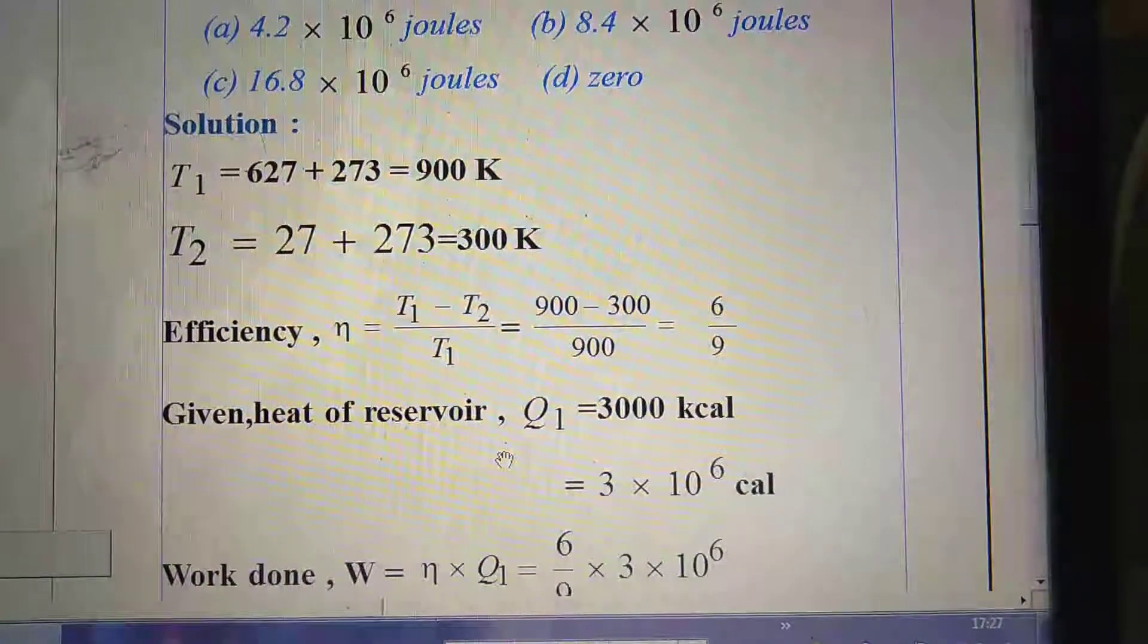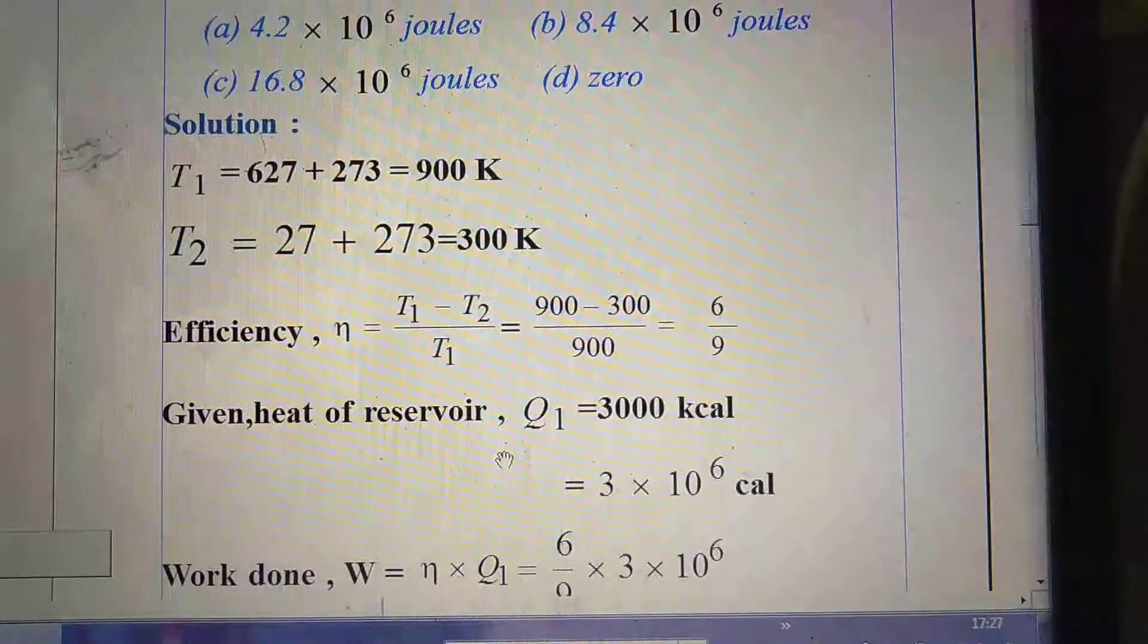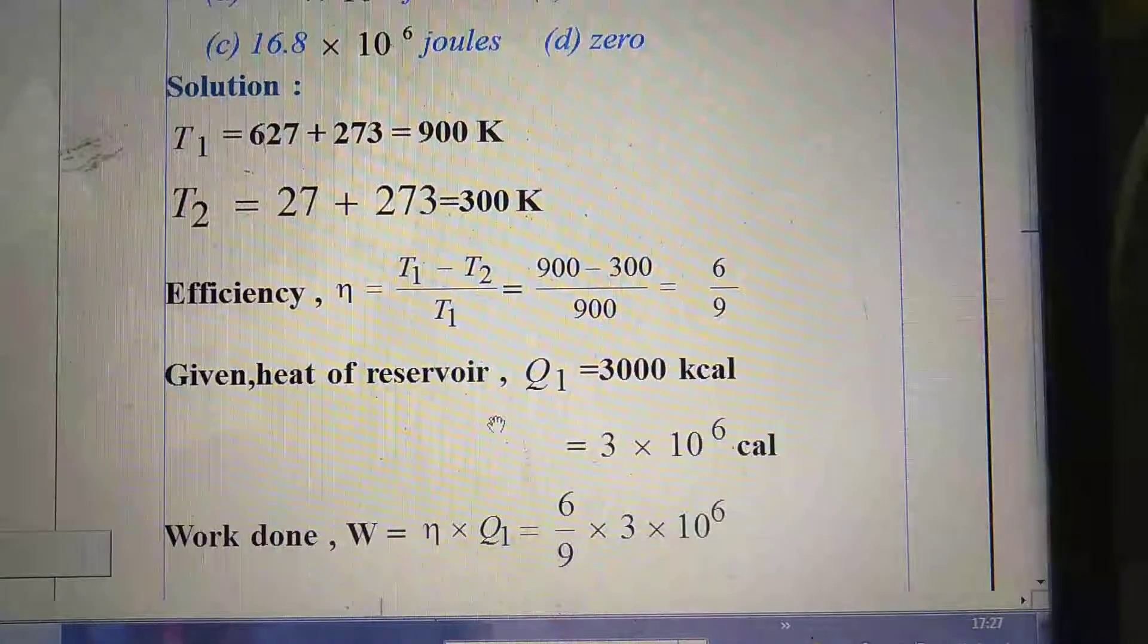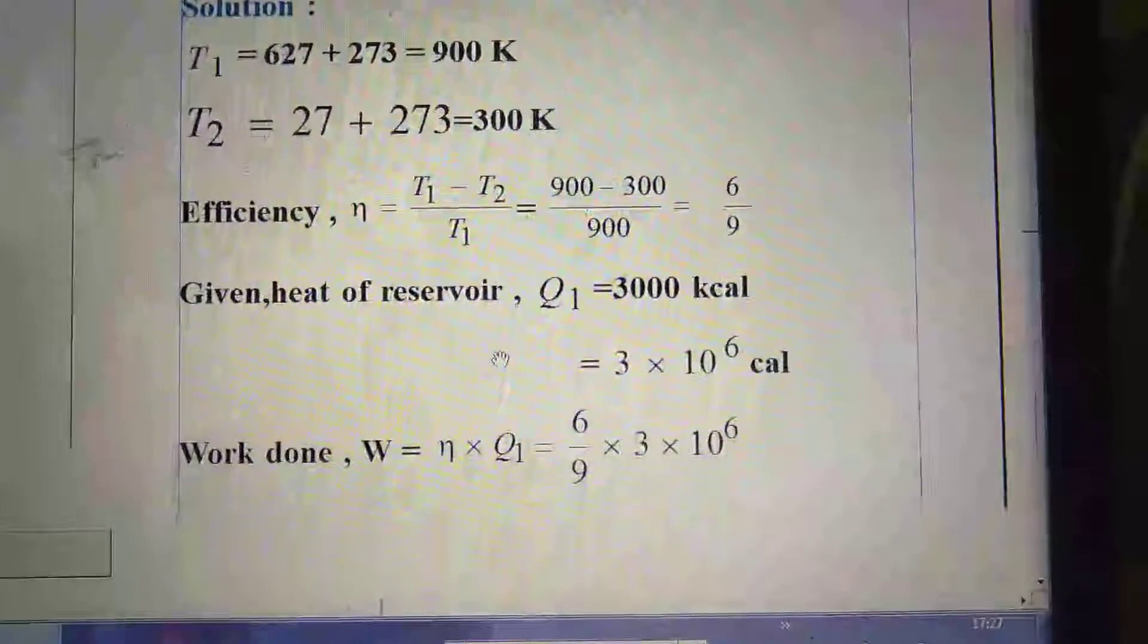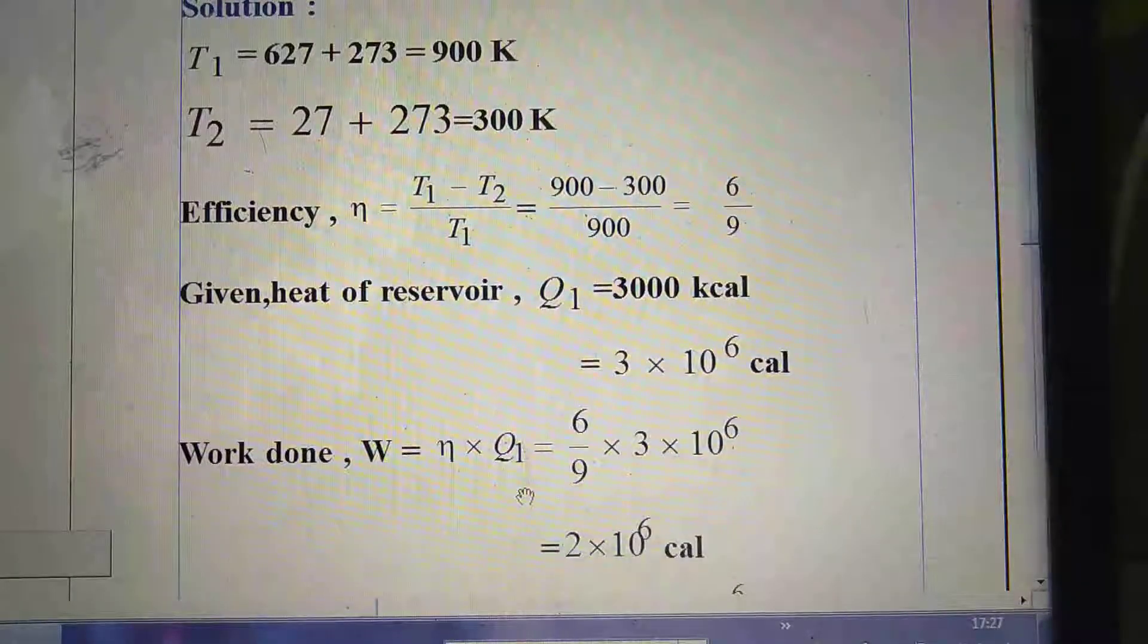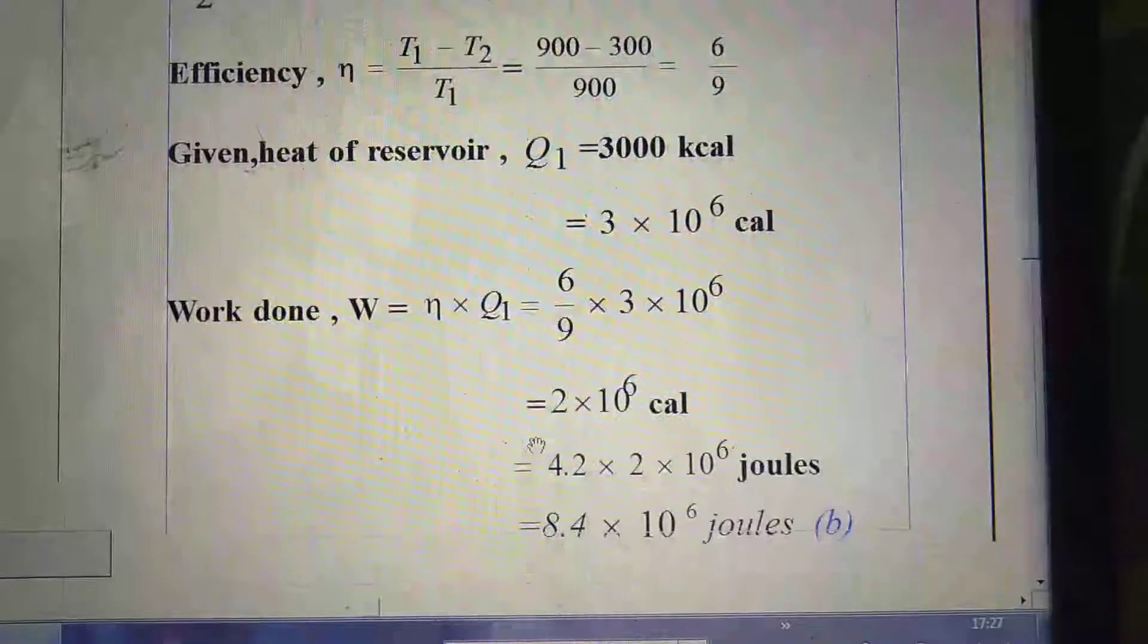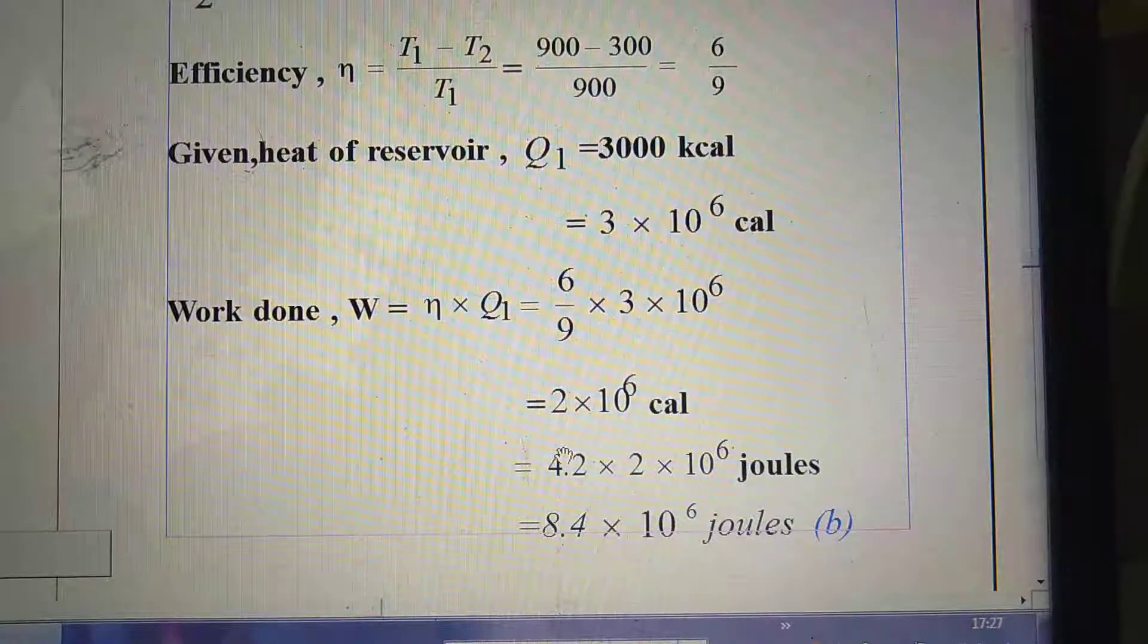So in question, heat of the reservoir Q₁ = 3000 kilocalorie. So we convert into calorie as 3 × 10⁶ calorie. Again, work done W = η × Q₁. So put the value of Q₁. Then after calculation, we find out as 2 × 10⁶ calorie.